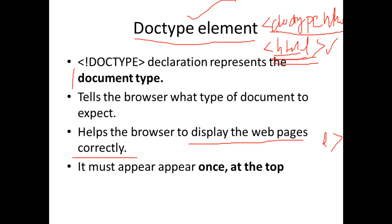The Doctype declaration must appear only once, at the very top of the page. If you want to use the Doctype declaration, you write DOCTYPE HTML, which tells the browser that the code to follow is HTML.